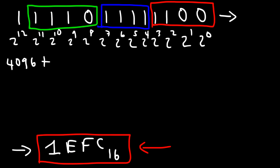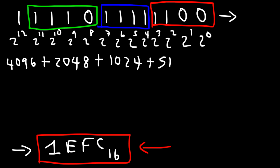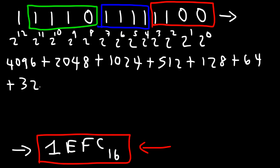Then we have 2 to the 11th, which is 2,048. And 2 to the 10th, which is 1,024. And 2 to the 9th, which is 512. Then 2 to the 7th, which is 128. 2 to the 6th is 64, 2 to the 5th is 32, and then we have 16, 8, and 4, which is 2 squared. So if we add up 4,096 plus 2,048 plus 1,024 plus 512 plus 128 and all the way down to 4, this gives us 7,932.